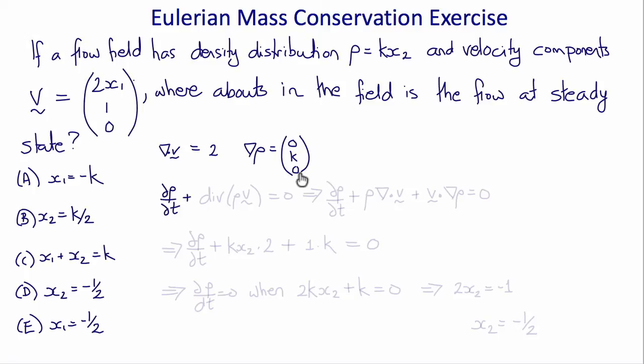The continuity equation is del rho del t plus the divergence of rho times v equals 0. Expanding that we get del rho del t plus rho times div v plus v dot grad rho equals 0.